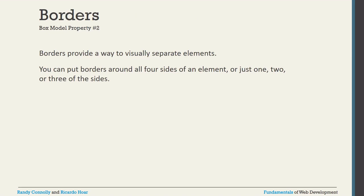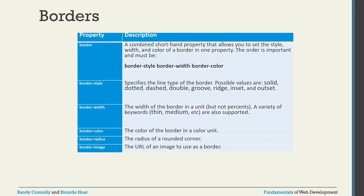The next important topic is borders — solid borders, dotted borders, and more. The border properties are: border-style, border-width, border-color, border-radius, and border-image. For border-style, common values include solid, dotted, dashed, double, groove, inset, and outset. You specify which style you want using the border-style property.